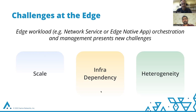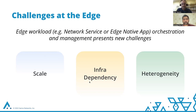The third challenge is heterogeneity. We have very different types of edge clusters — different storage, different compute, different Kubernetes flavors, different networking providers. And when it comes to the workload, there is no shortage of variety of different network services and edge computing applications. So these are some big challenges in terms of having the edge be successful.